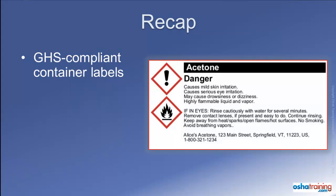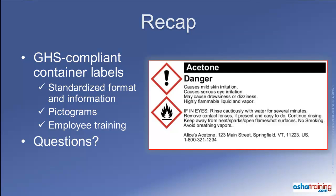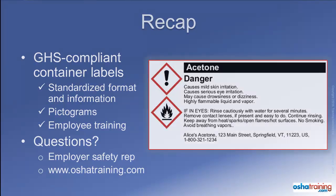In review, the revised OSHA Hazard Communication Standard requires GHS-compliant labels to appear on all containers of hazardous chemicals and products. Those labels are standardized in the information that must appear, including the display of all applicable pictograms, which are visual icons that identify the various classifications of hazards associated with the products. Employers must provide training to all affected workers so they understand the information on those labels. If you have any questions about the GHS labeling system or the hazards of the products you work with, contact your employer's safety representative or the safety professionals at OSHA Training Services.